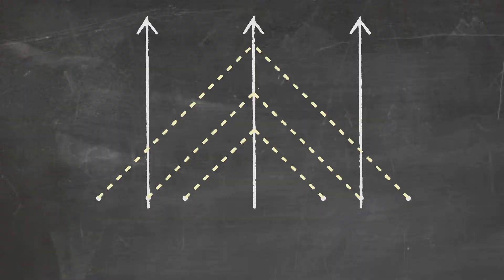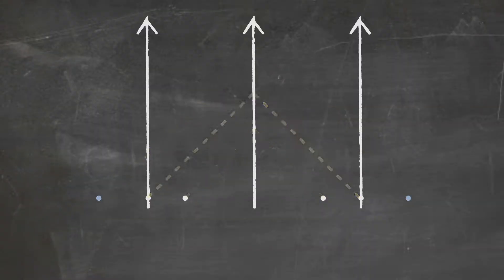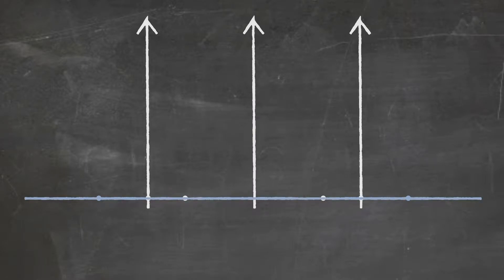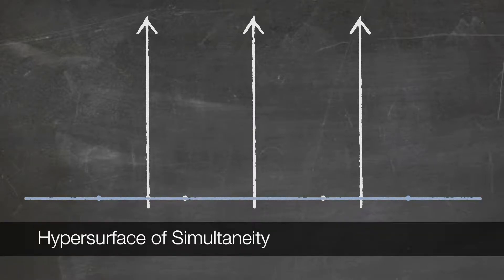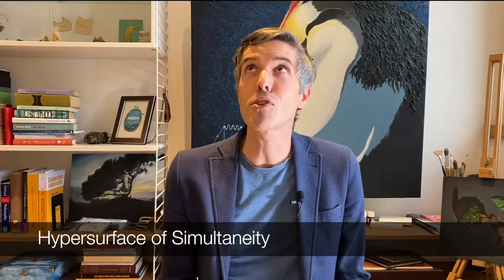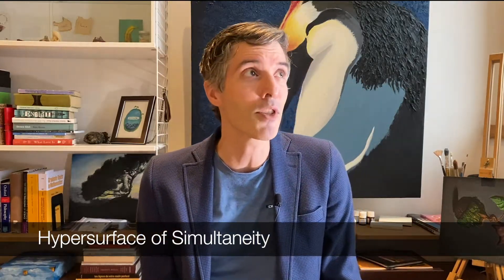Now suppose we collect together all the events that happen simultaneously according to Einstein's definition. That collection is called a hypersurface of simultaneity. It's quite a mouthful — a hypersurface of simultaneity. A hypersurface is something that's one dimension lower than the total space.